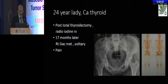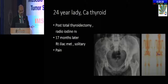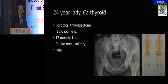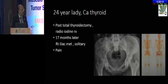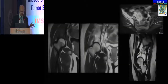Moving to the next scenario: a patient started complaining of pain around her right hip joint, which turned out to be an iliac metastasis of follicular carcinoma of the thyroid. She was having pain — VAS around four to five. It was a solitary lesion, and that was the further imaging.